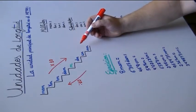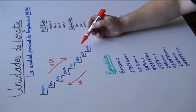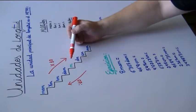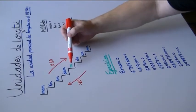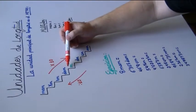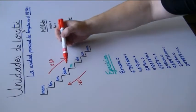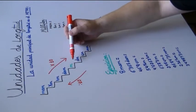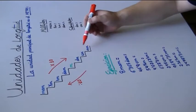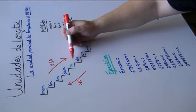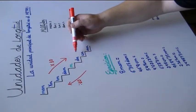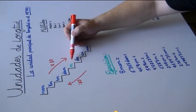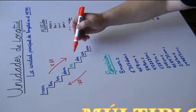Es muy sencillo. El metro tiene unos múltiplos, o sea, unidades más grandes que él, representados en la escalera en la parte superior. Y también tiene unos submúltiplos o divisores, representados en la parte inferior de donde está el metro. Los divisores son más pequeños que el metro.